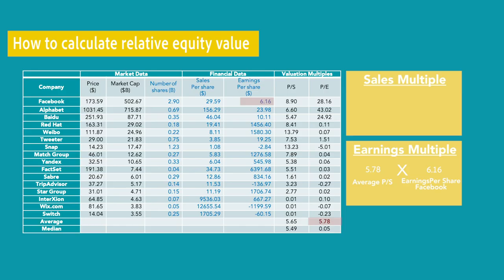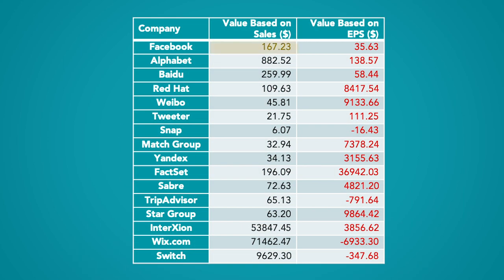To conclude, valuation does not end with just calculating these equity values. It is not about numbers, but also reasonable judgment. For instance, we have two different values here: $167.23 based on sales multiples, and $35.63 based on earnings multiples. The question is, which one should we use to make our conclusion? For a more meaningful valuation, we need to make a careful inspection of the estimated values before we make a reasonable conclusion. This is one of the most important tasks in valuation, which is going to be demonstrated subsequently.